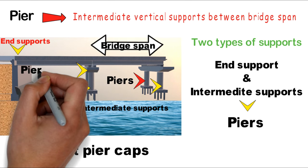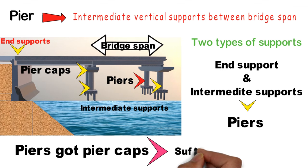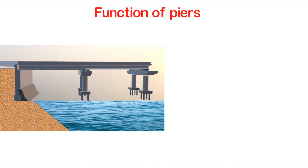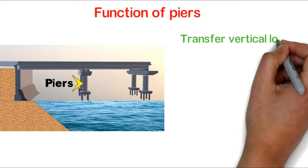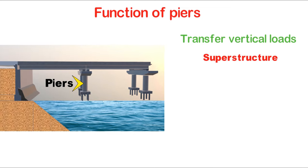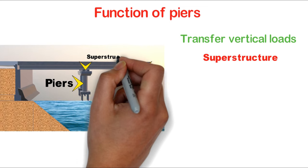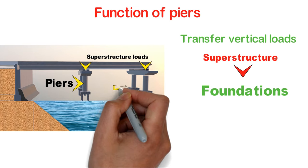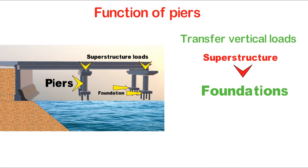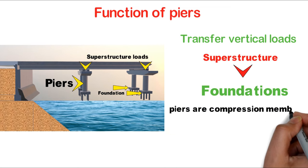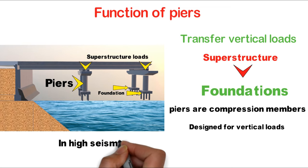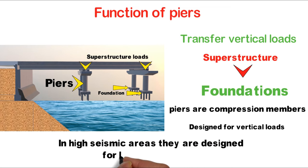The head of the pier is called the pier cap, and piers are always accompanied by a pier cap which gives sufficient bearing area for the deck components. The main function of piers is to transfer vertical loads from the superstructure to the foundations. Piers are compression members, but in high seismic areas they are also designed for lateral loads.